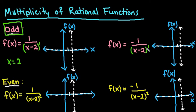Anytime you have an odd multiplicity, your graph is going to open on opposite sides of the horizontal asymptote. One will be above the horizontal asymptote, and one will be below the horizontal asymptote.